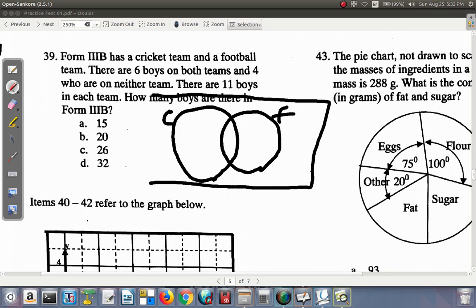You have a universal set which is 3B. You have six boys on both teams, so six on both. And four who are on neither team. So four is outside of cricket and football.